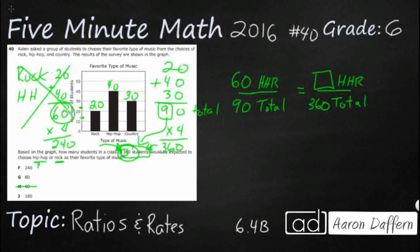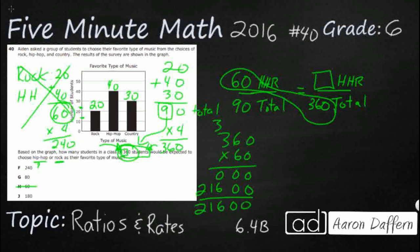And so we can use our cross multiplication here. And we can say 360 times 60. Let's see if we can figure out what that is. So that's going to be 36, 18, 21. So wow, look at that. 21,600. And this is 90.